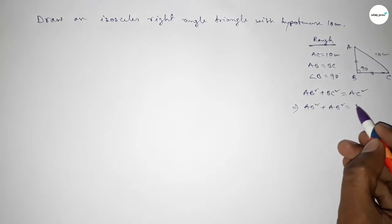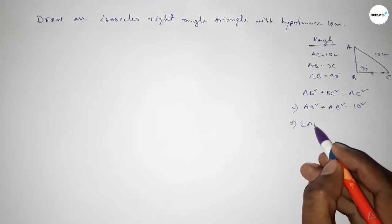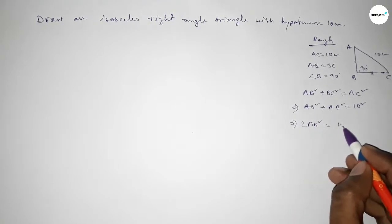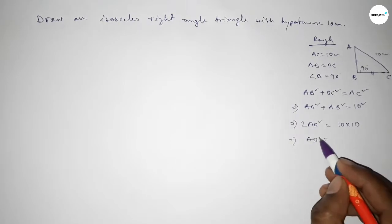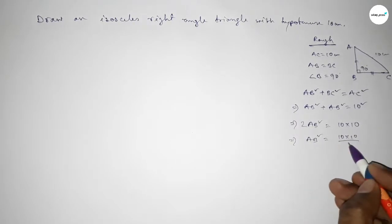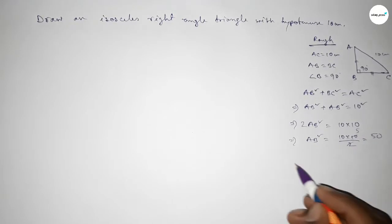And this is 10, so 10 squared, implies that 2 AB squared equal to 10 into 10, implies that AB squared equal to 10 into 10 over 2. So if you divide it by 2, so this is 50.